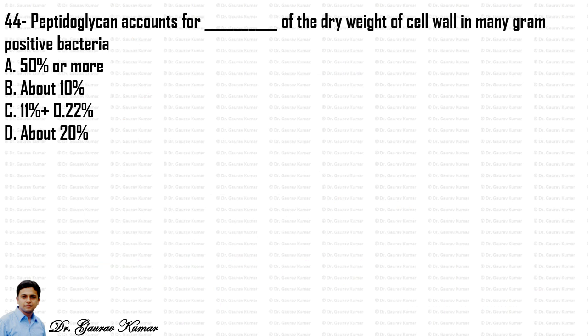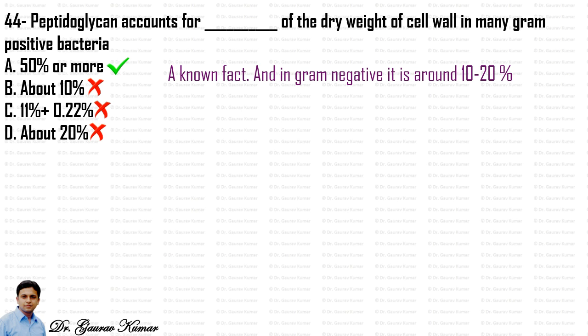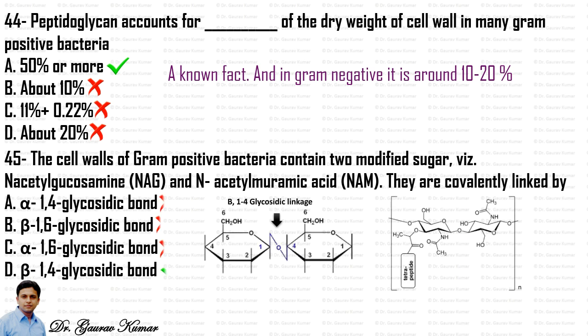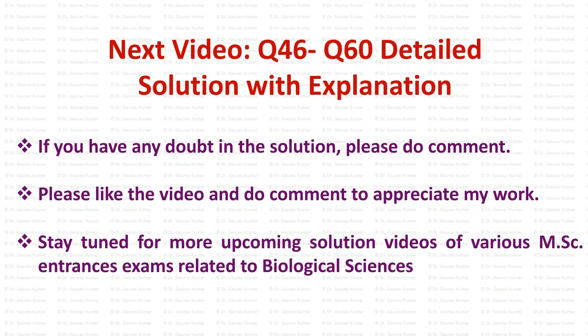Next question: peptidoglycan accounts for what percent of the dry weight of the cell wall in many gram-positive bacteria? In gram-positive bacteria, peptidoglycan accounts for around 50% or more — sometimes up to 90% — of the dry weight, whereas in gram-negative bacteria it is only about 10–20%. The cell wall contains two modified sugars: N-acetylglucosamine (NAG) and N-acetylmuramic acid (NAM), covalently linked by beta-1,4 glycosidic linkage.